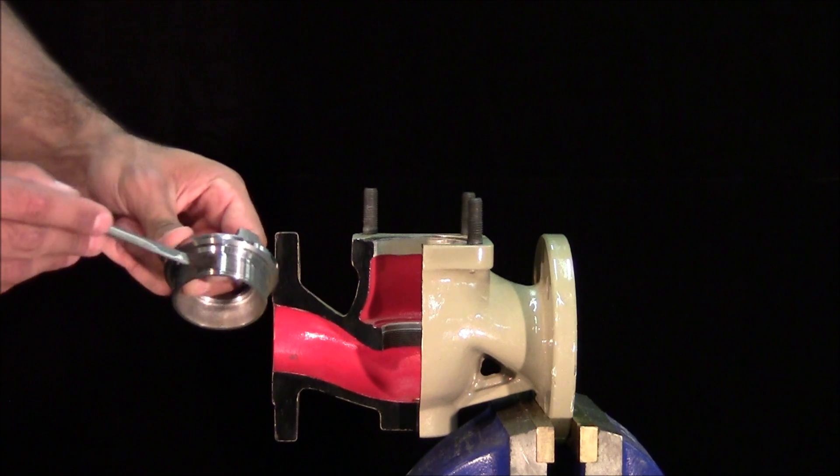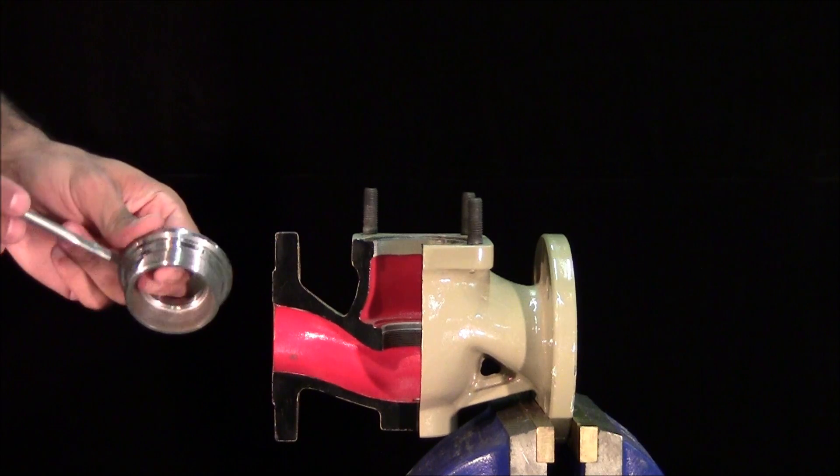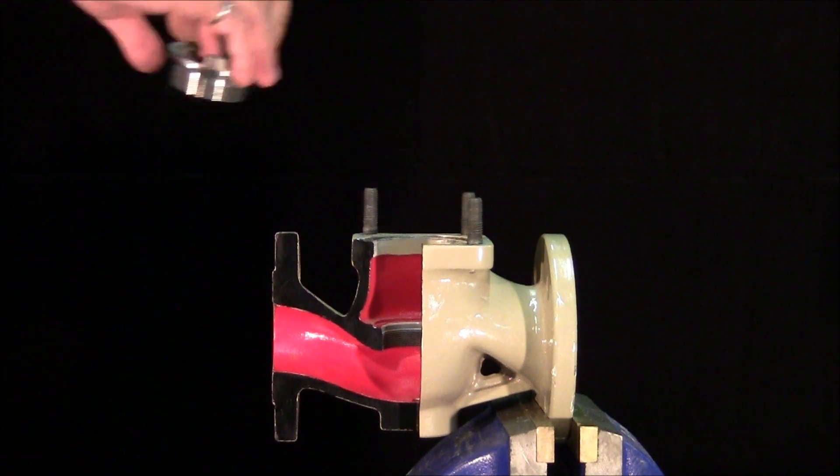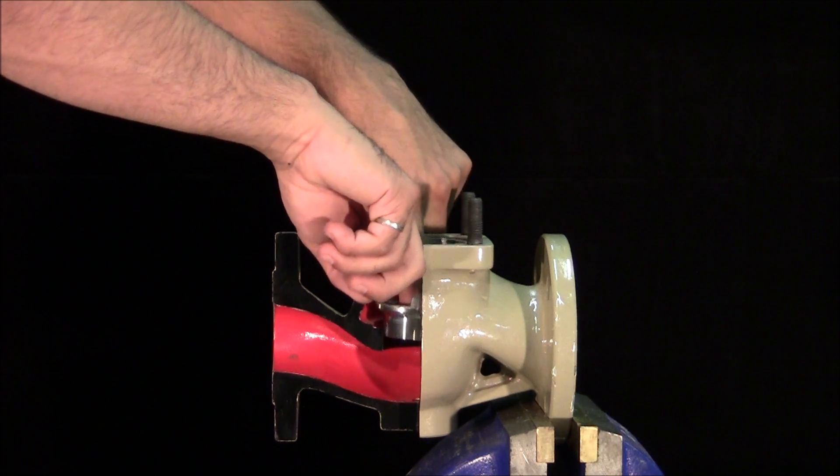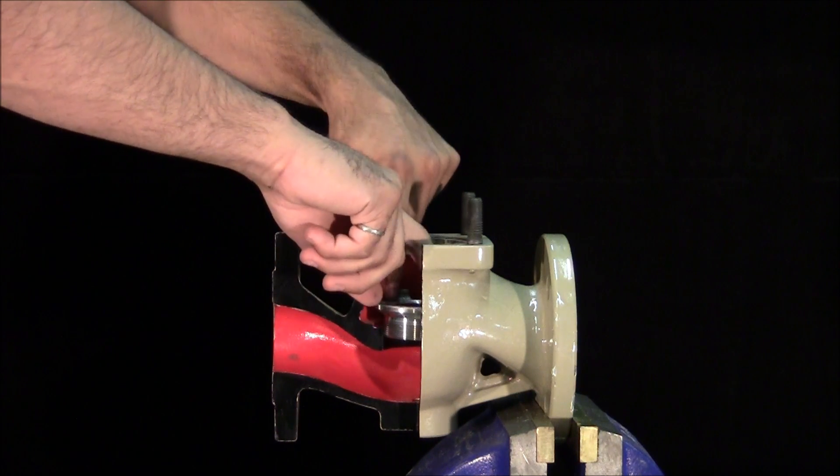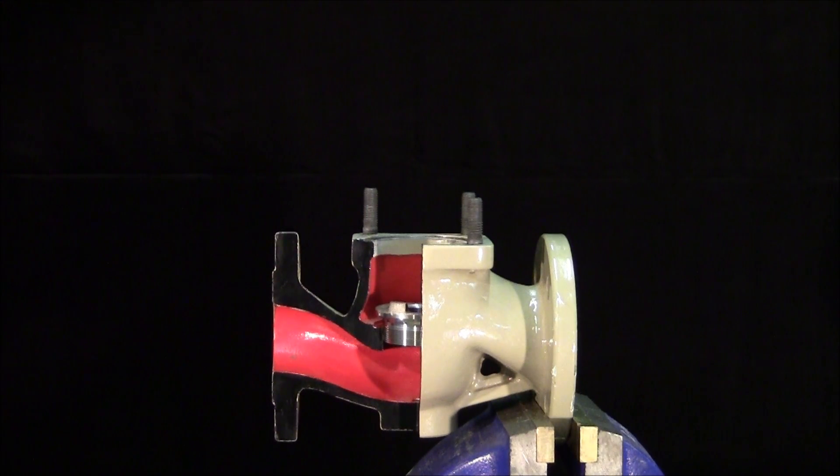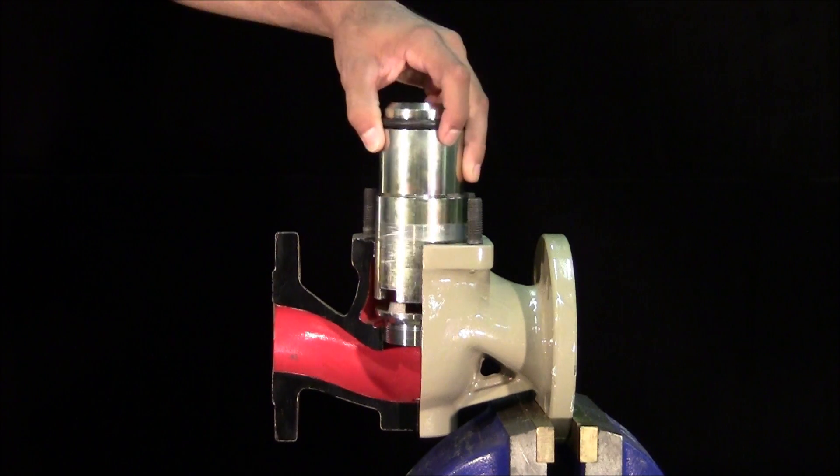We'll begin by lubricating the threads of the seat before inserting into the body. The seat will easily spin until it contacts the valve body.